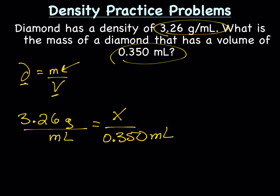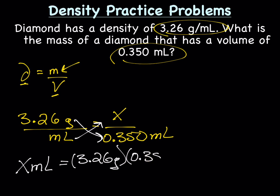The easiest way to solve this type of problem when you have 2 fractions with an equal sign in between is to cross multiply. We'll end up with x milliliters equals 3.26 grams times 0.350 milliliters, giving us x milliliters equals 1.141 grams milliliters.